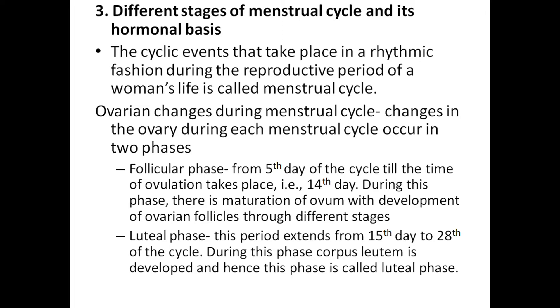The first is the follicular phase, from the 5th day of the cycle till the time of ovulation, i.e., until the 14th day. During this phase, there is maturation of the ovum with development of the ovarian follicle through different stages.